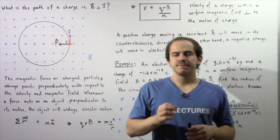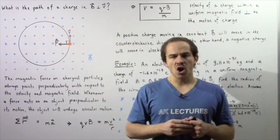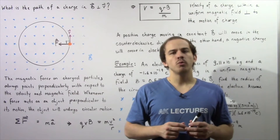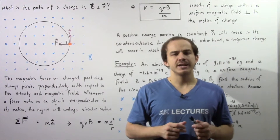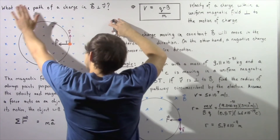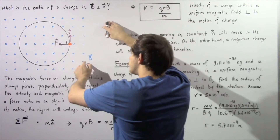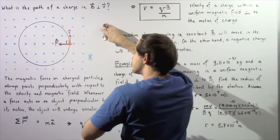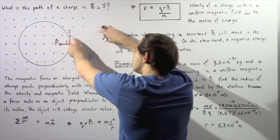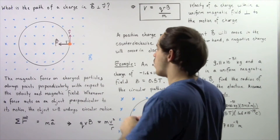Let's begin this lecture by asking the following question: what exactly is the pathway made by an electric charge moving within a uniform magnetic field in which the velocity is always perpendicular to the magnetic field? Let's begin by looking at the following diagram in which this region of space contains a uniform magnetic field that points into the board as shown by the following blue axis. Now at this particular moment in time, this positive charge has a velocity vector that points in the positive direction along our y axis.